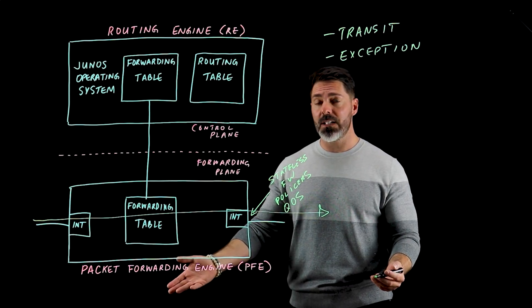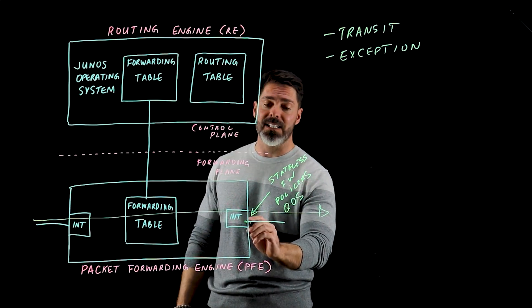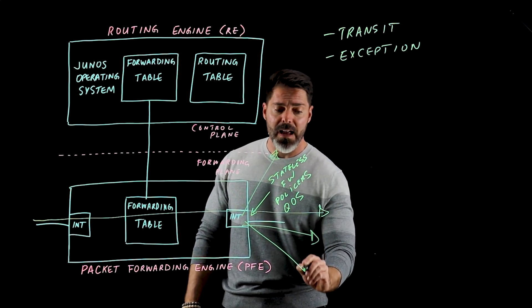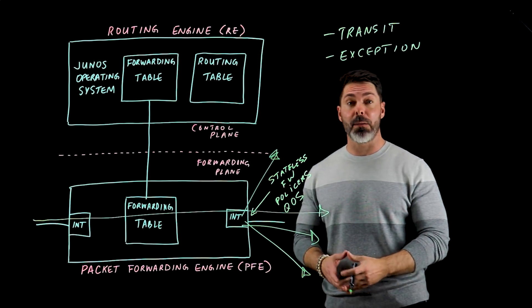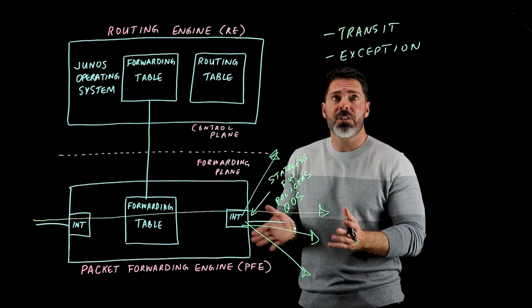If it's multicast traffic, we might see that a packet comes in and actually gets sent out multiple interfaces. The packet forwarding engine is more than capable of handling both unicast as well as multicast traffic. So that's transit traffic.